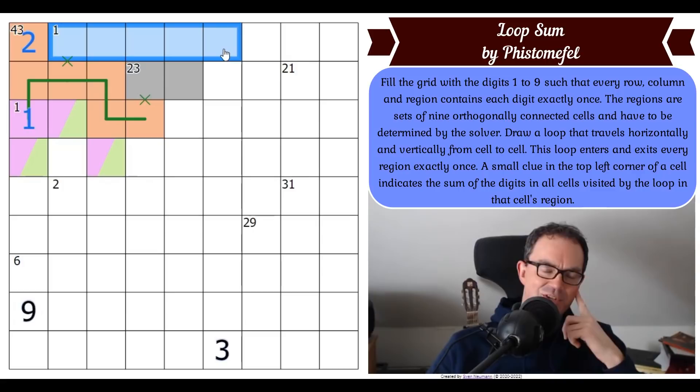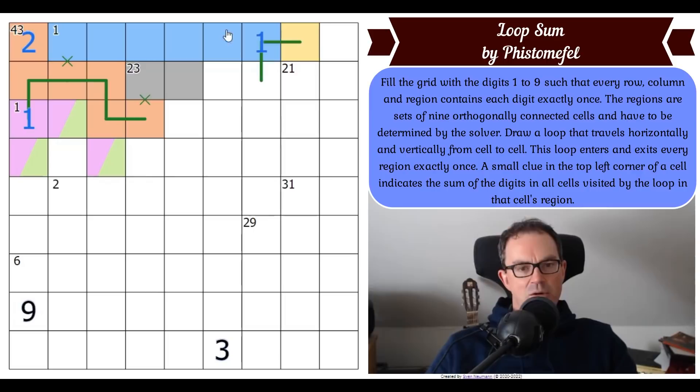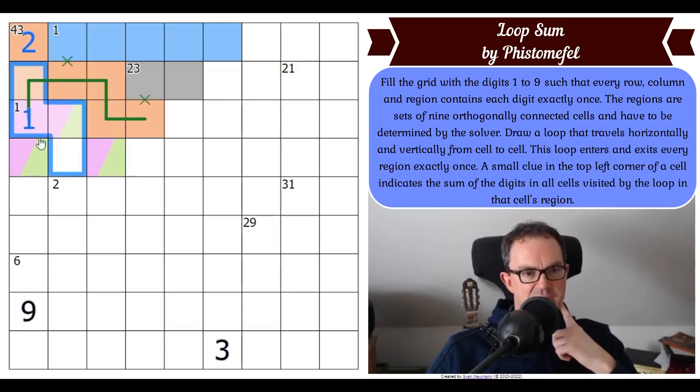If that were a blue one and this was some new colour, blue could escape down here - entering blue and just clipping it like that. So maybe this can't be a blue one, but this one could be. Anyway, this is all conjecture - we've hit a bit of an impasse in this part of the grid.